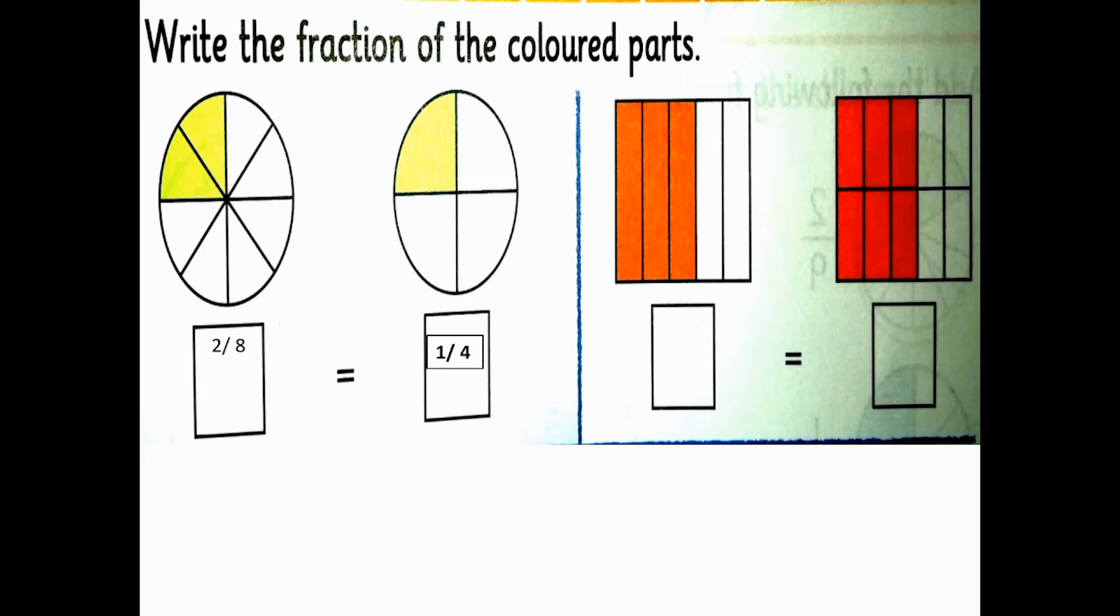Now we have 2/8 equals 1/4. In the first part, which is 2/8, we have 2 colored parts. Two 4s are 8, so 2/8 is equal to 1/4. These are equivalent fractions.